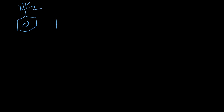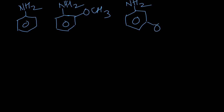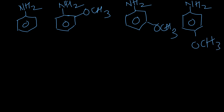We have tolidine (aniline), aniline, ortho-methoxy aniline, meta-methoxy aniline, and para-methoxy aniline. The OCH3 group shows plus M and minus I effects. Here SIP (steric inhibition of protonation) is seen in ortho, minus I operates from meta, and no extra effect from para.